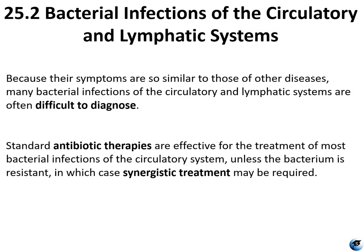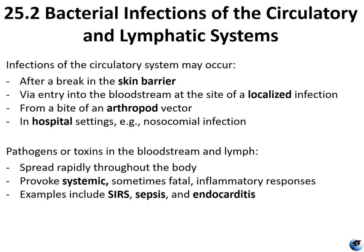Viral and parasitic infections usually affect the myocardium — the heart muscle itself — and this is called myocarditis. Inflammation and infection of the pericardium, the membrane surrounding the heart, is called pericarditis, usually caused by bacteria or viruses, and very rarely by fungi. Standard antibiotic therapies are effective for most bacterial infections unless the bacteria is resistant, in which case synergistic treatment may be required. Infections may occur after a break in the skin barrier, via entry into the bloodstream at a localized infection site, from an arthropod vector bite, or via nosocomial infection in hospital settings.